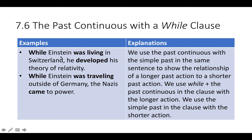For example: while Einstein was living in Switzerland, he developed his theory of relativity. This happened for a long time, and then the shorter action happened inside that time. While Einstein was traveling outside Germany, the Nazis came to power — came to power suddenly in the middle of this long time when he was traveling, and that's in the past continuous.